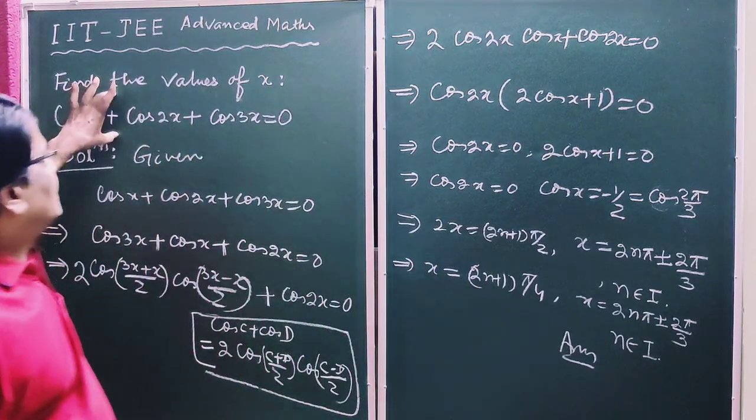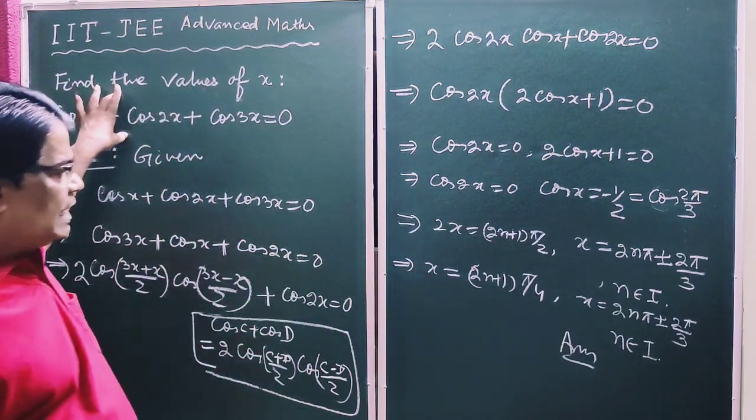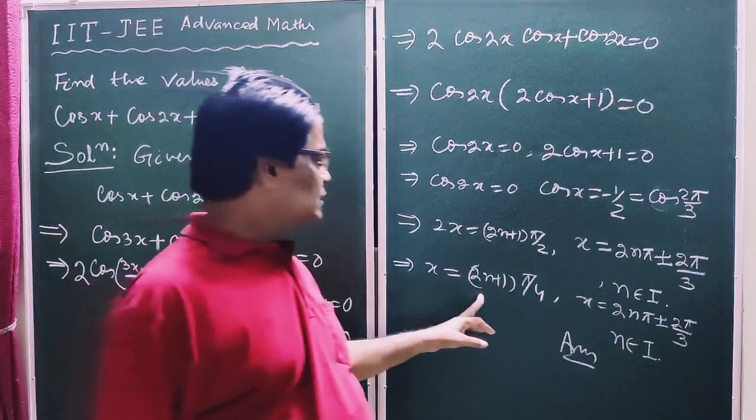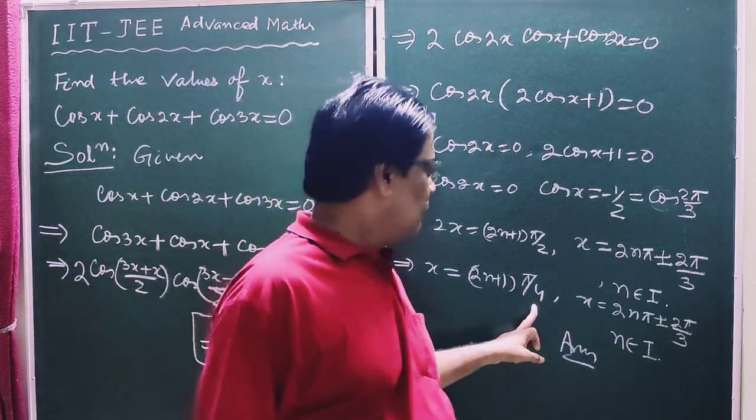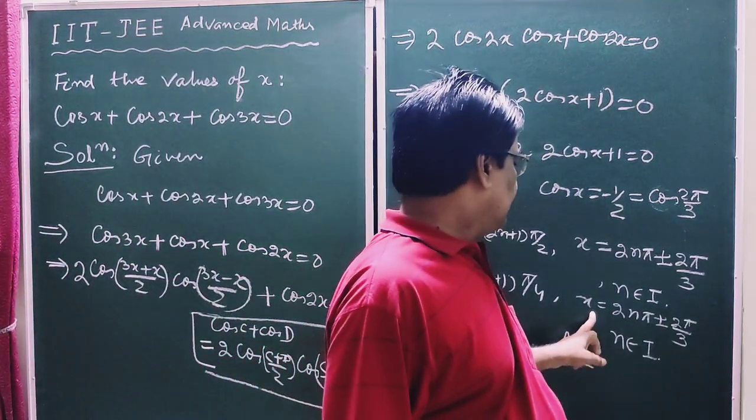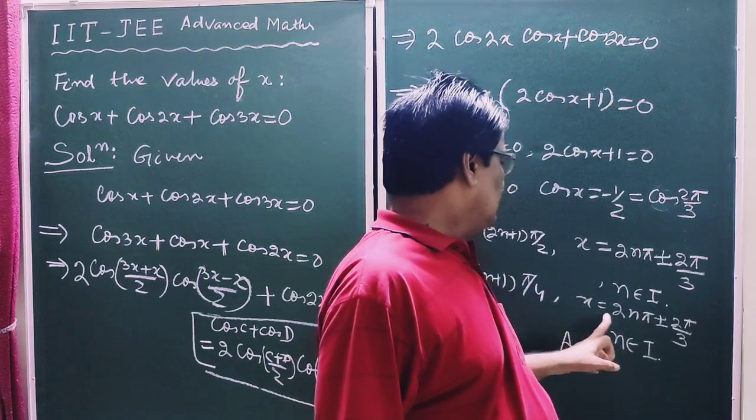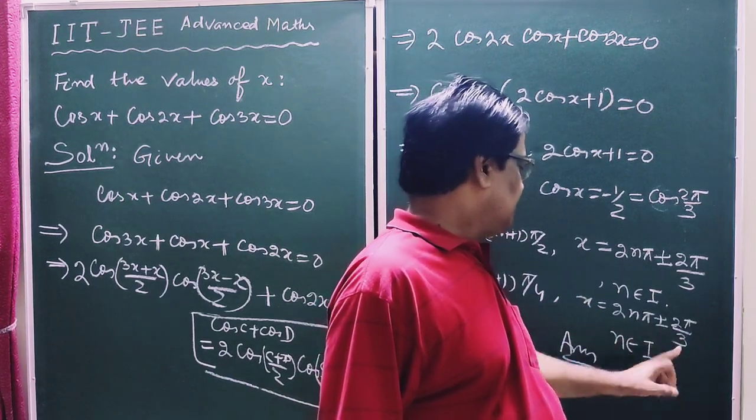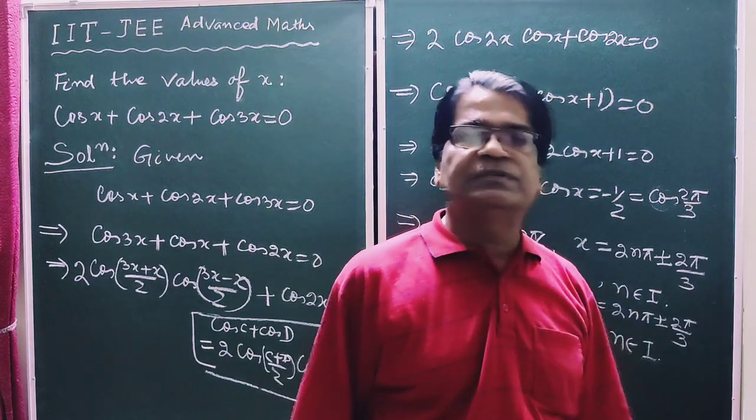So after solving the trigonometric equation, we get the values of x: that is 2n plus 1 pi by 4, and the other one is 2n pi plus minus 2 pi by 3, where n belongs to the set of integers.